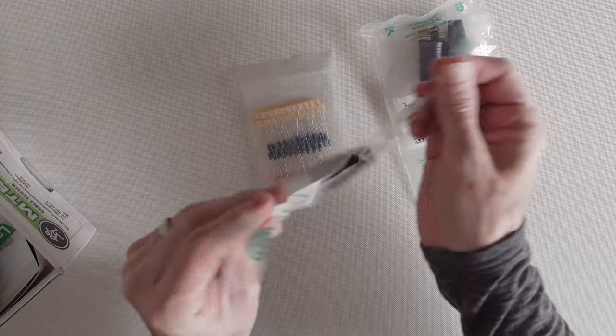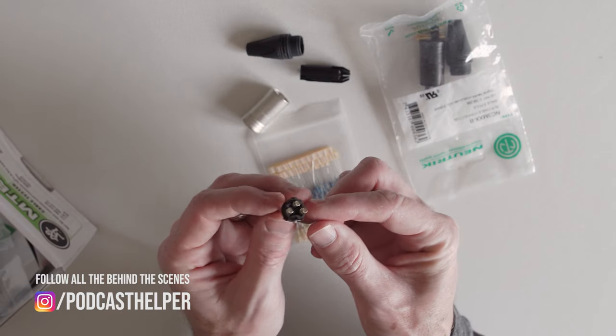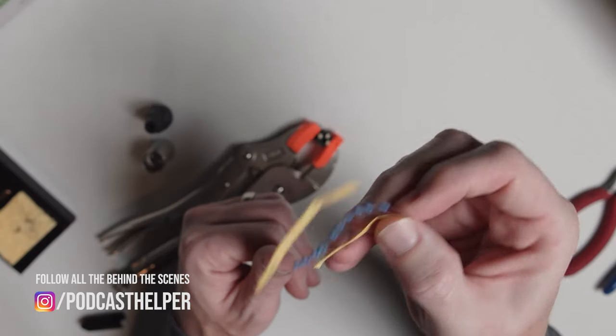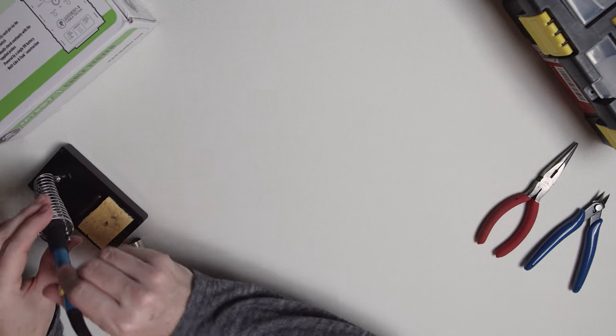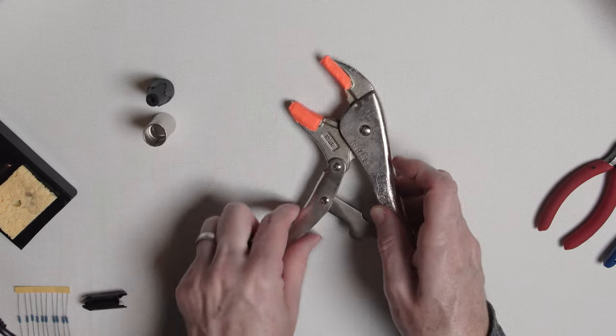The materials you're going to need are one XLR male plug and some 150-ohm resistors. I also need a soldering iron and then something to hold the plug in place while you work on it. I'm using a pair of channel locks.